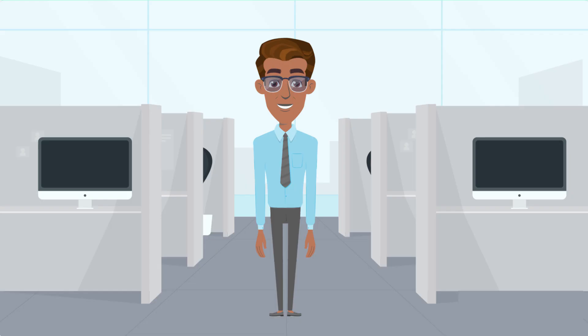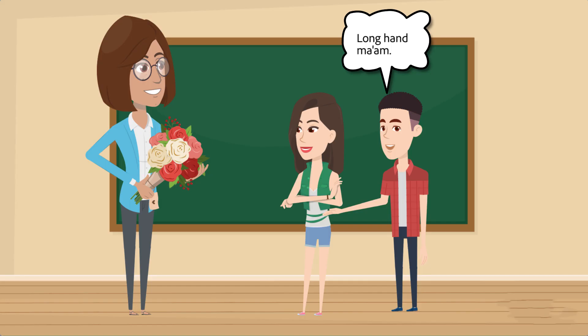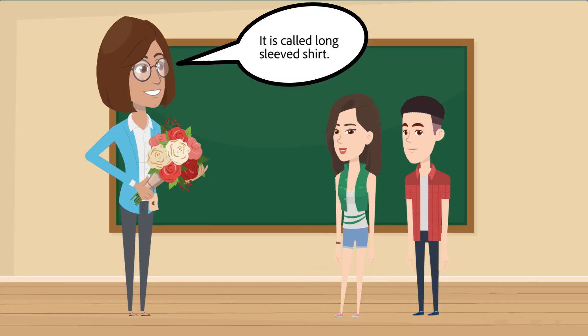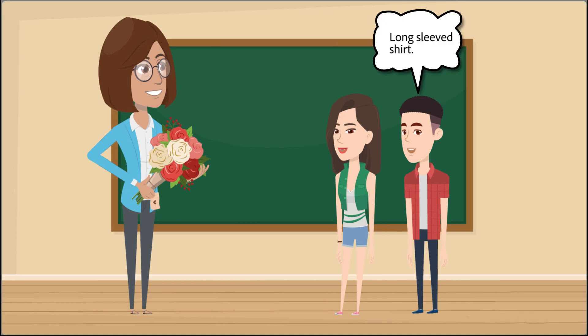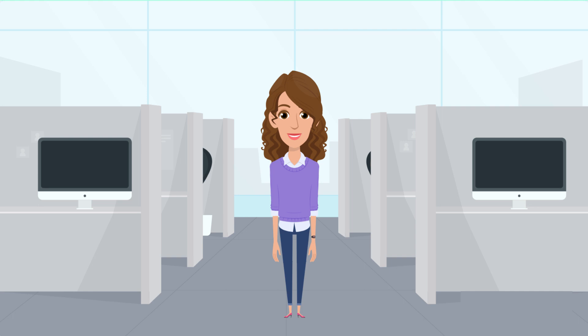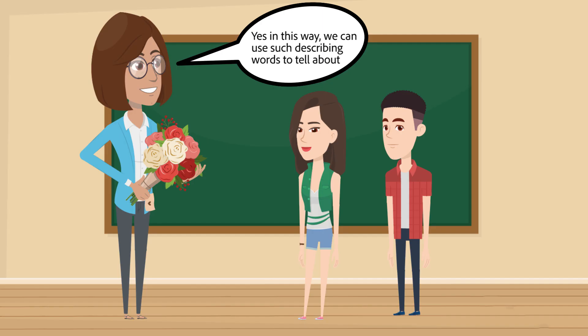How is his shirt? Long hand, ma'am. It is called a long sleeve shirt. What is she wearing on her feet? High heels, ma'am. Yes. In this way, we can use such describing words to tell about any quality, advantages, or disadvantages of something.